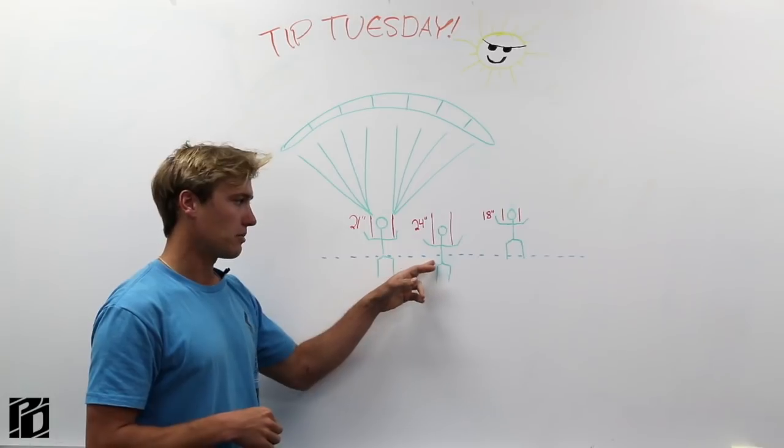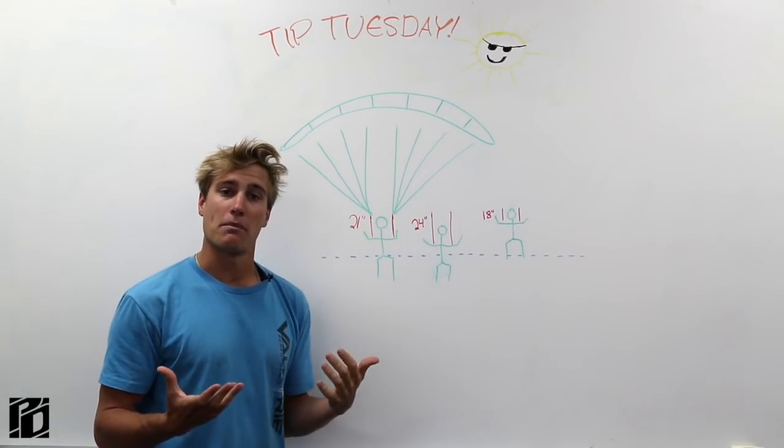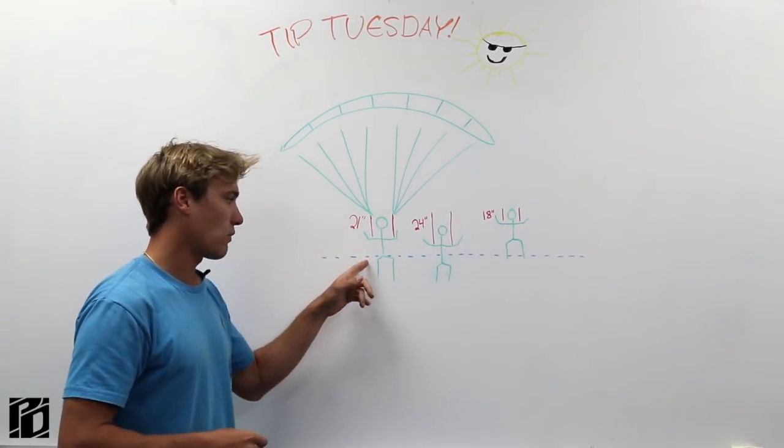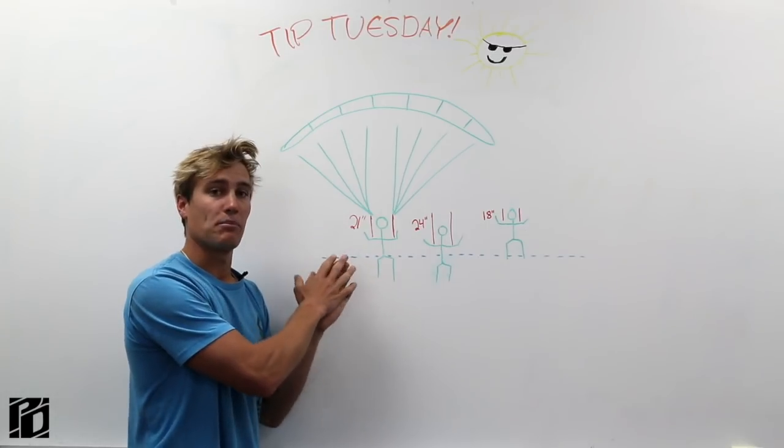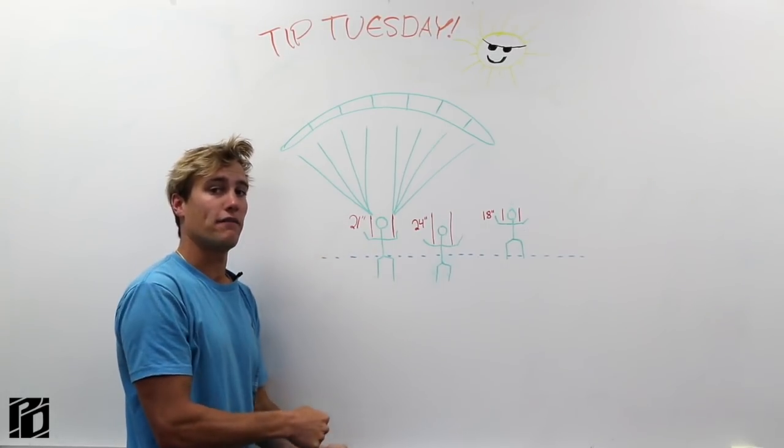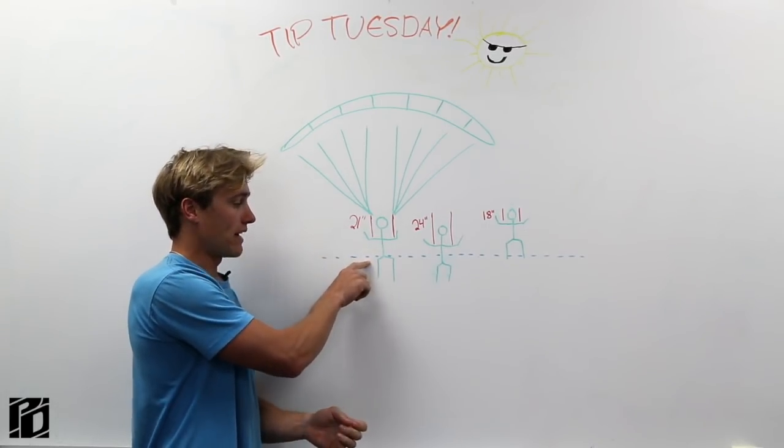And then this blue dotted line down here below, I'm just going to call it the bottom end of their flare. So that's where this jumper, their preferred bottom end finishing power on their flare is right here.